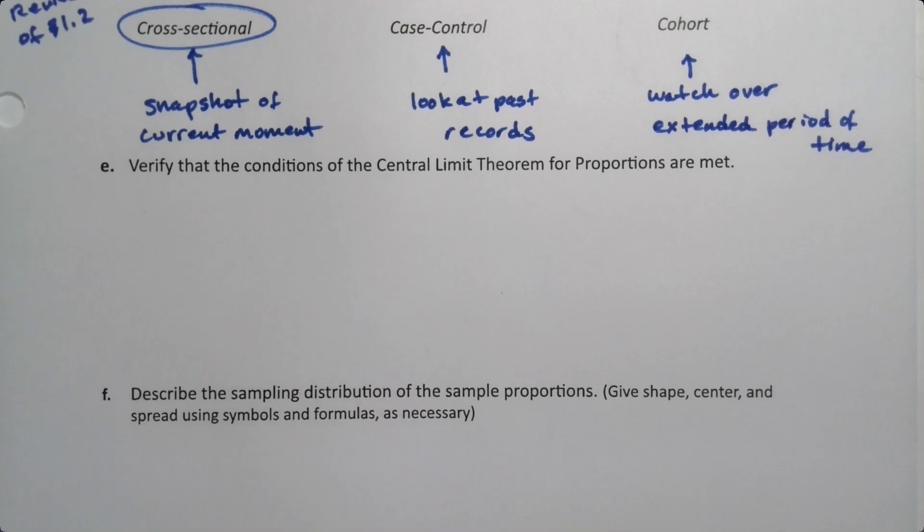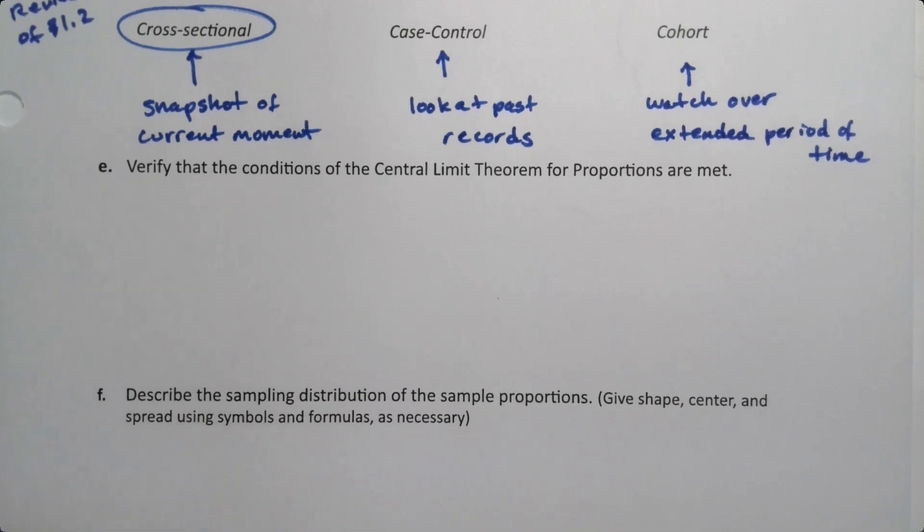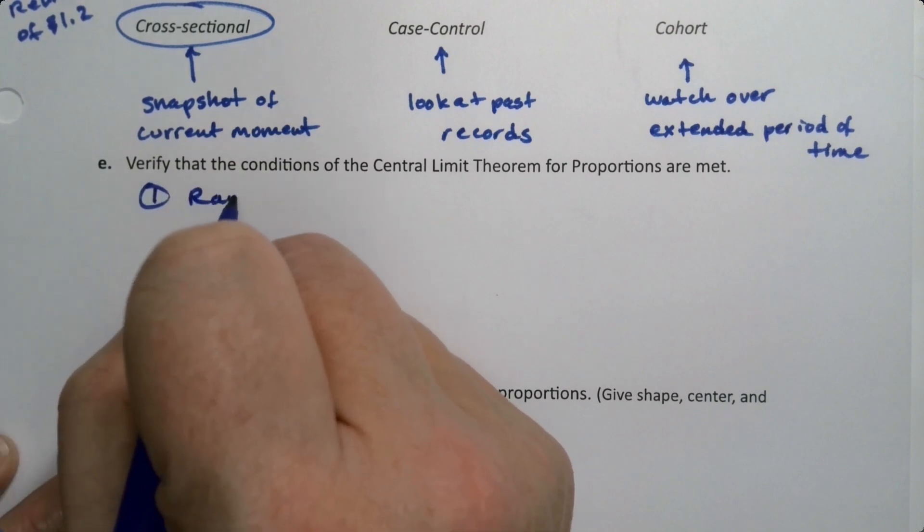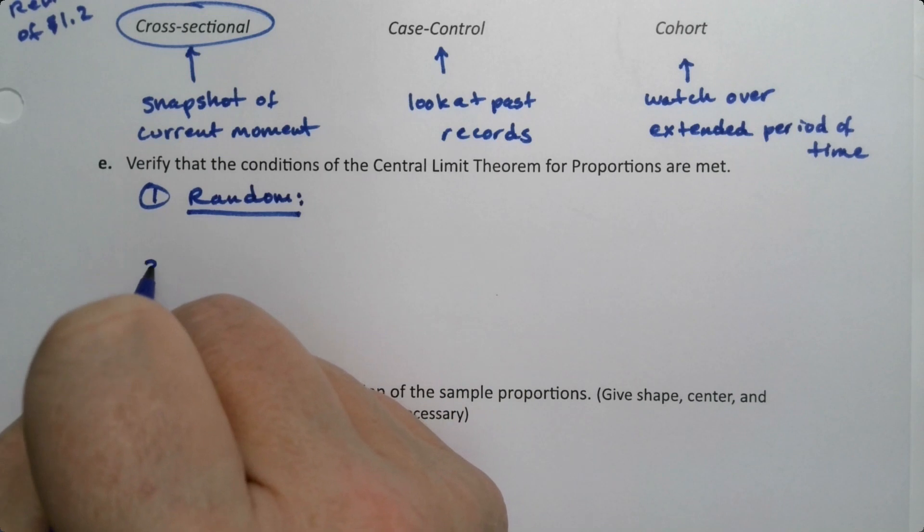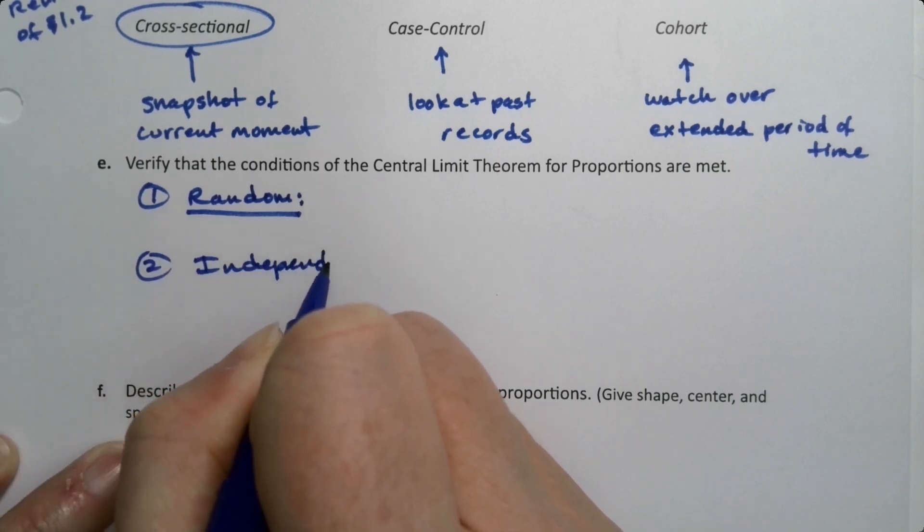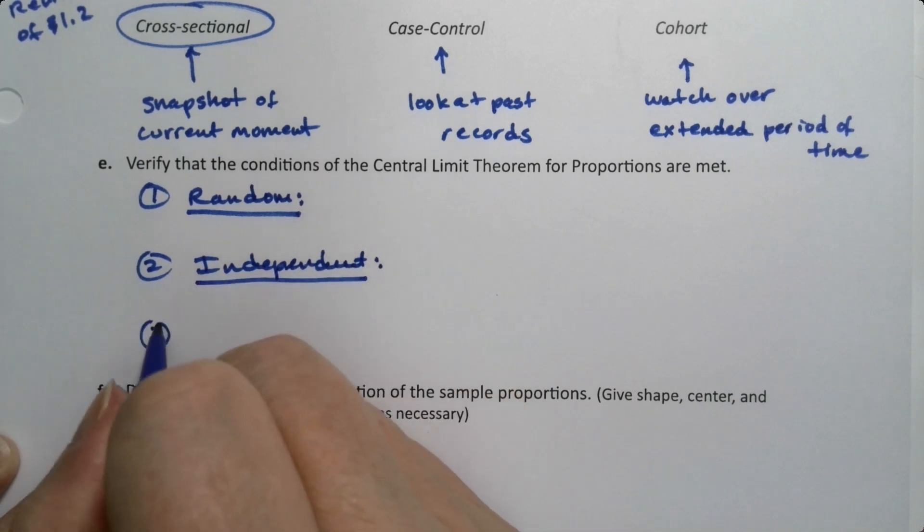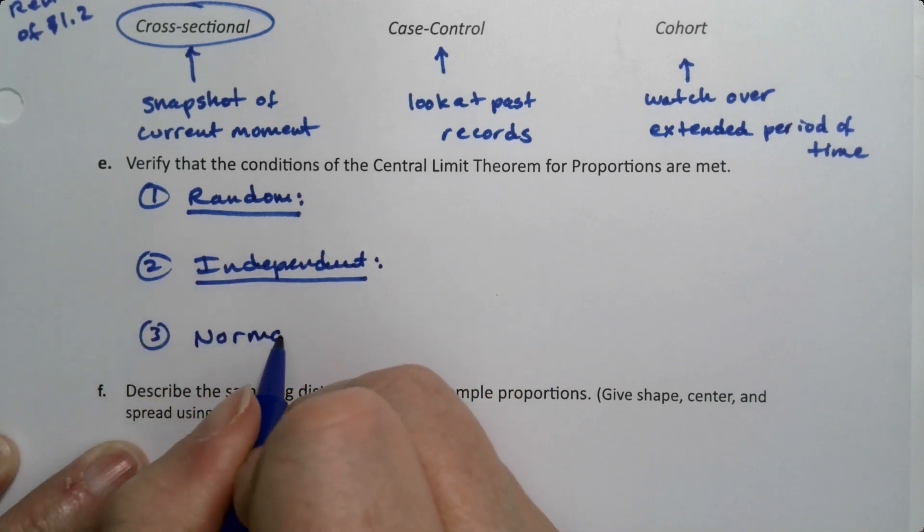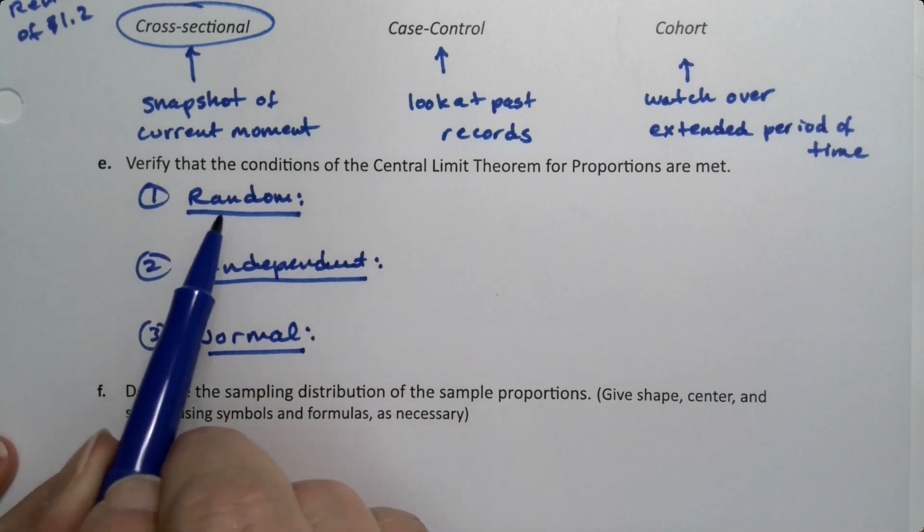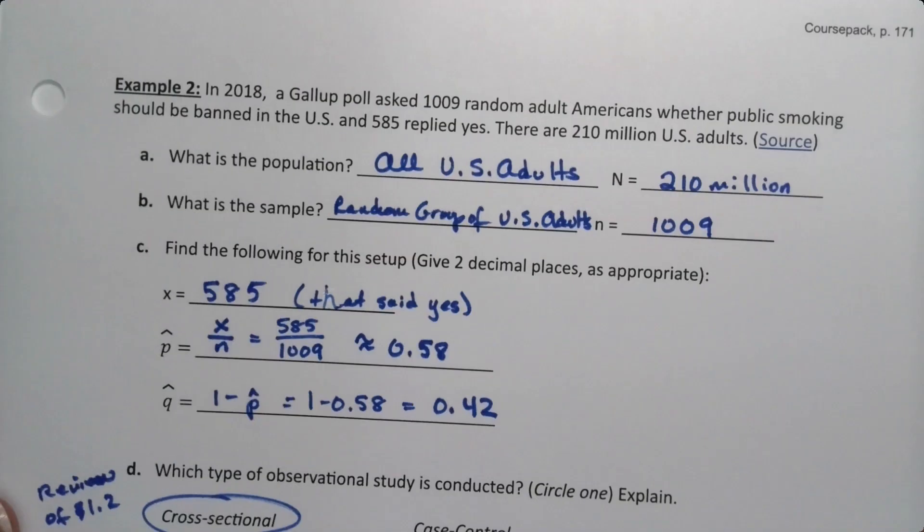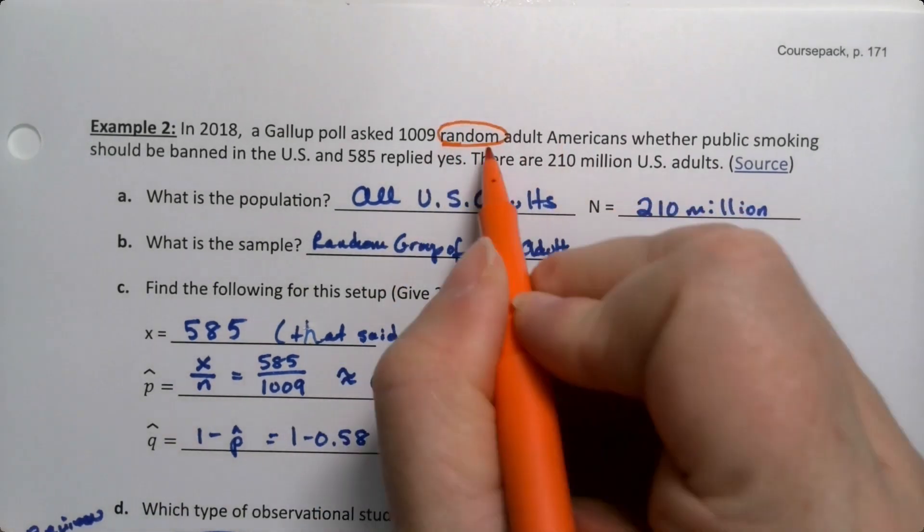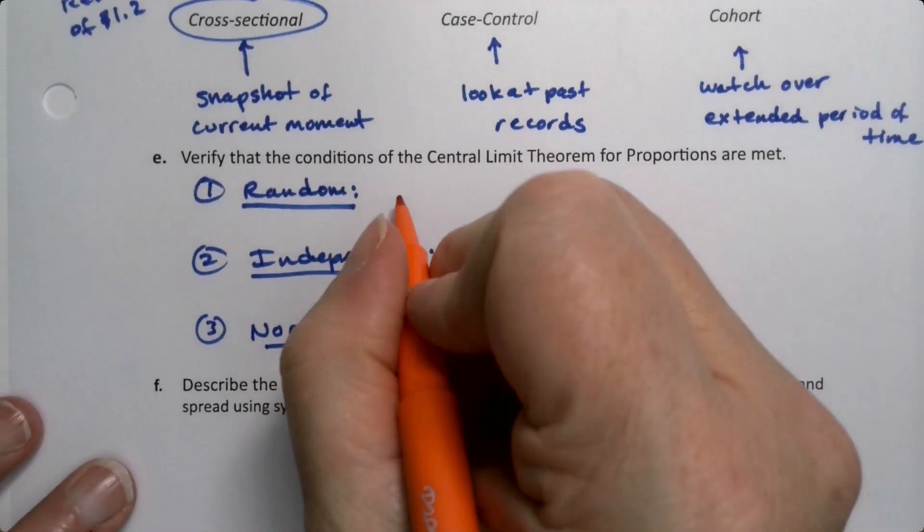So now we want to verify the conditions that the Central Limit Theorem for proportions are met. We have three conditions: Random, Independent, and Normal. It's not enough to write the three conditions and show you understand what they are; you have to verify them. First thing I want to verify is Random. Well, Random is easy because Random was given up here, that it's given. Done, easy peasy.